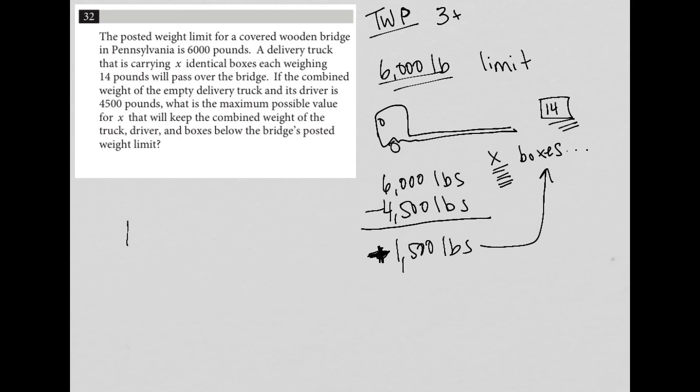If each box is 14 pounds, and I don't know how many boxes I have, I can say that 14X - 14 times X - has to be less than or equal to 1,500. That's my translation for what this question is really asking me.